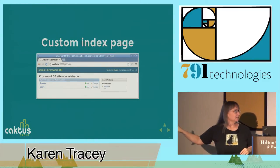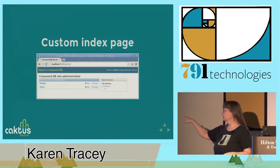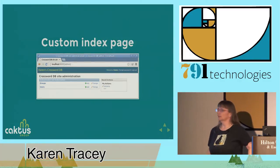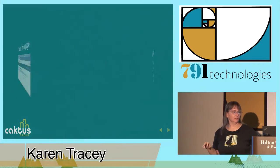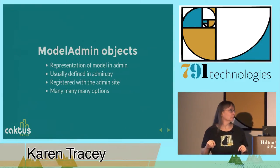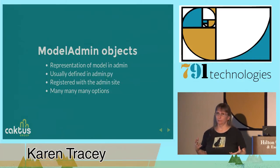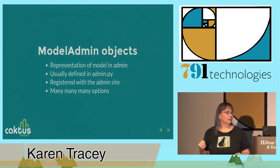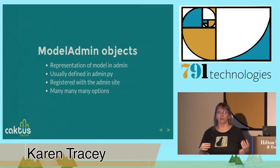The index page has now been configured with the crossword database content on the top, in the title and tabs, so it doesn't say Django anymore. Once you get beyond that basic level of customization, you need to start talking about how you want your models to appear in Django. To describe that to admin you talk about model admin objects — what a model admin object is is the description and representation of a model in admin.